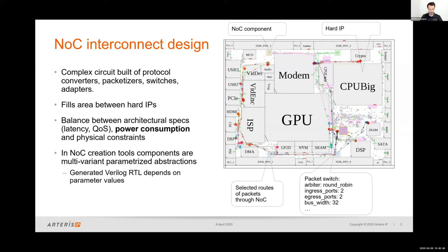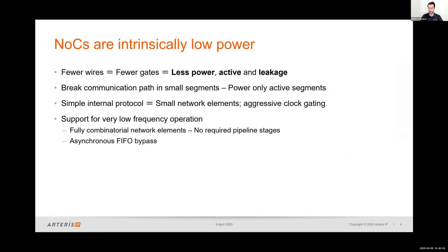The power requirement aspect is becoming more and more important in today's SOCs, especially those in the AI space. That brings up the question: how exactly do network on chip interconnects help optimize for power? Network on chips are architected to save power from the ground up. They use a technology called packetization, which results in fewer wires to do communication across the chip — fewer wires means less data path logic, which means fewer gates.